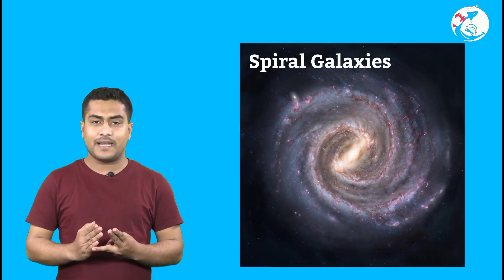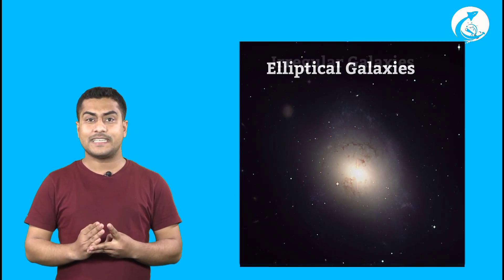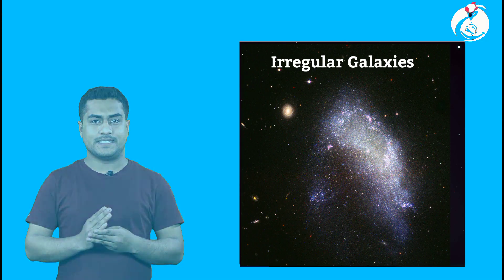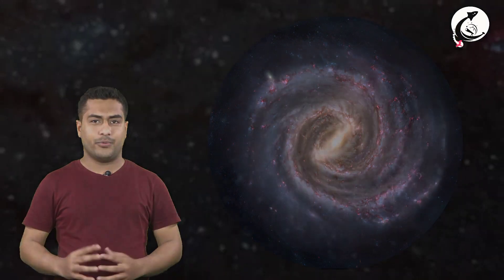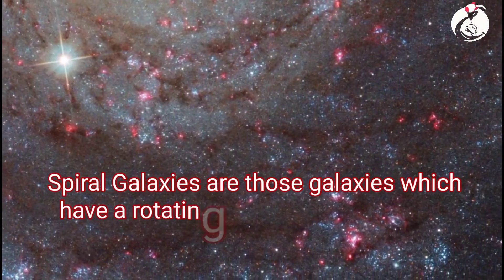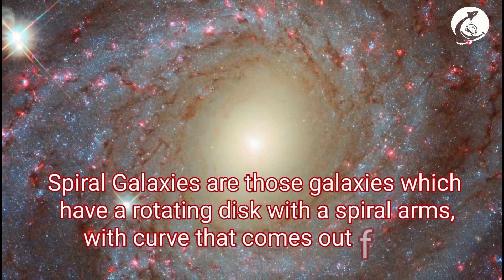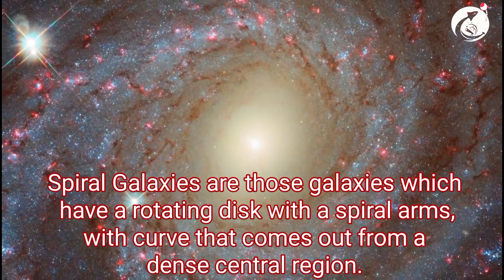We can classify galaxies into three major groups: spiral galaxy, elliptical galaxy and irregular galaxies. Let's talk about spiral galaxies. Spiral galaxies look like a giant pinwheel. They have rotating disks with spiral arms with curve that comes out from the dense central region.